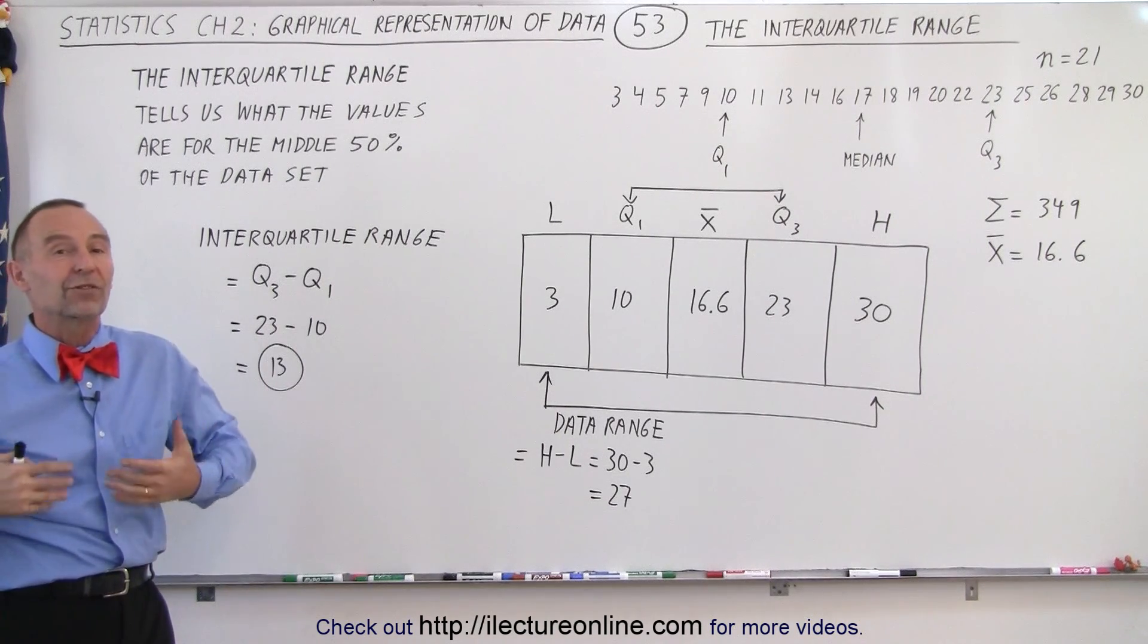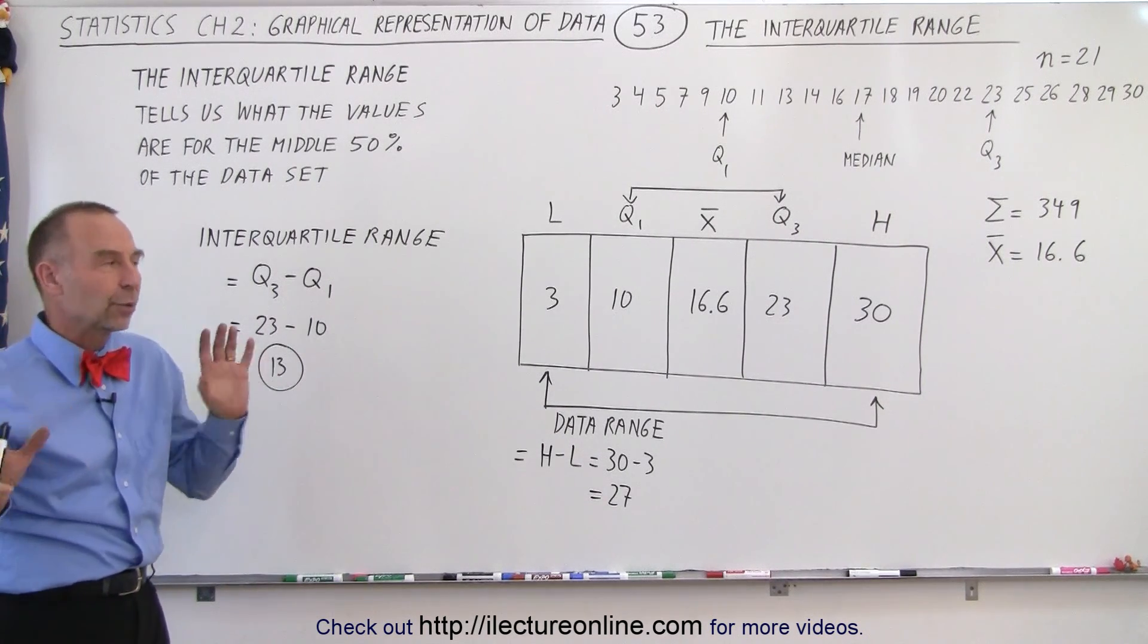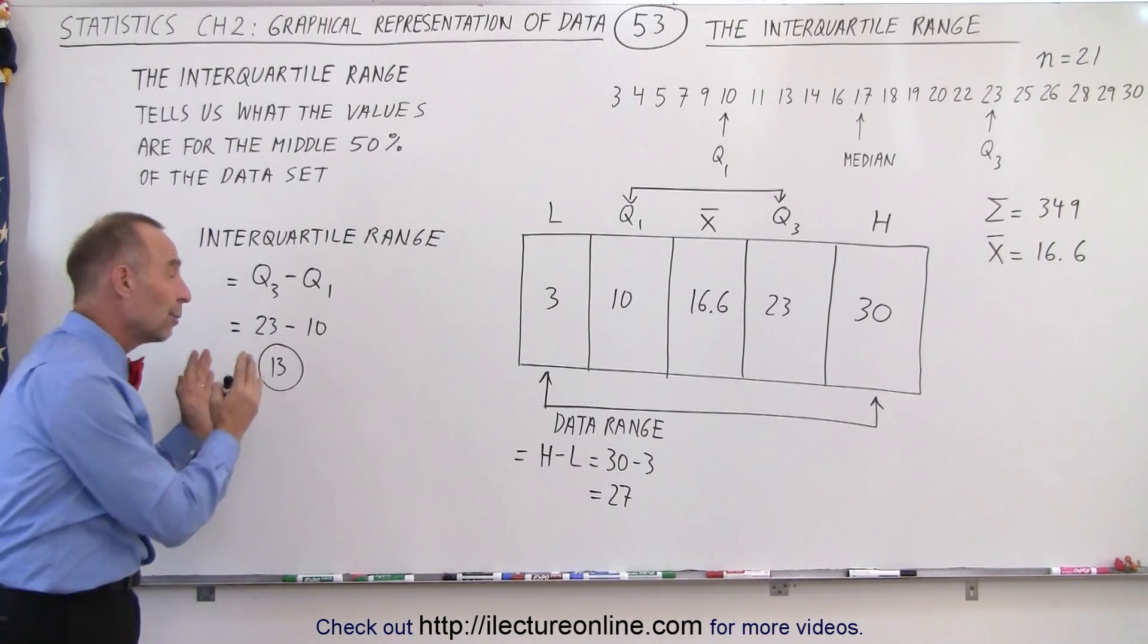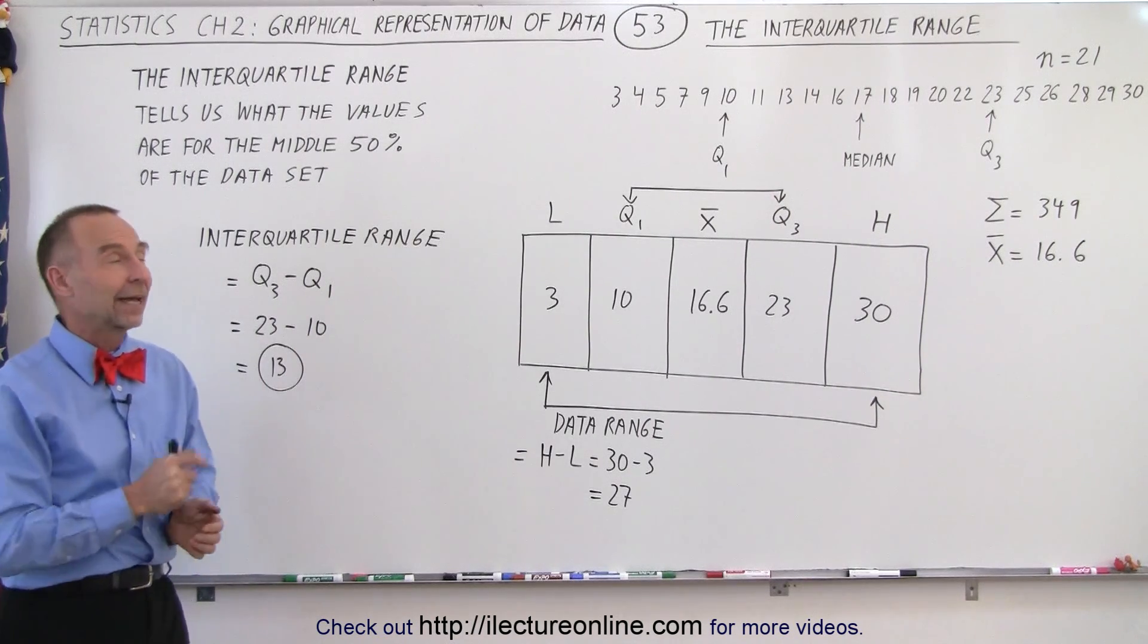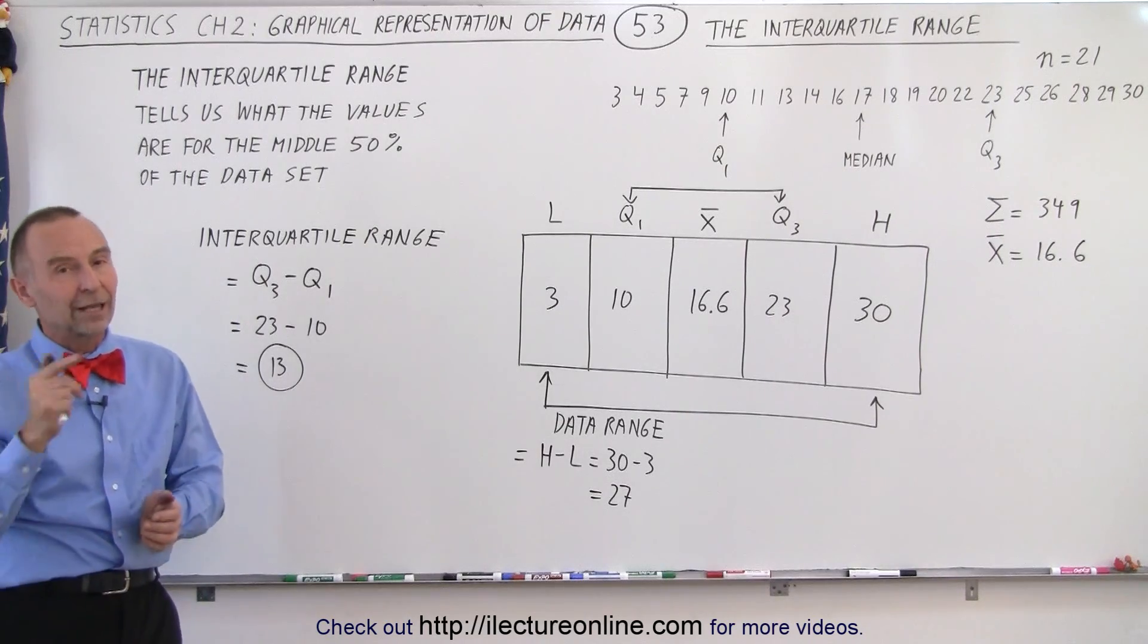And that is usually important because that's what we most care about. We don't care so much about the outliers as we do about the middle portion of the data. And that's why that is such an important number.